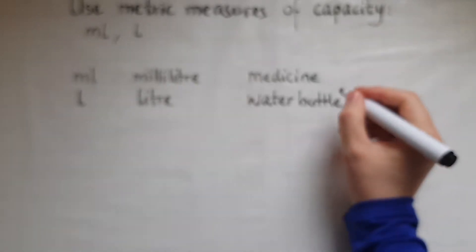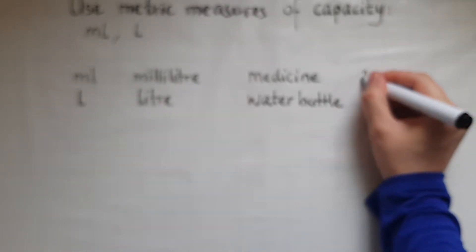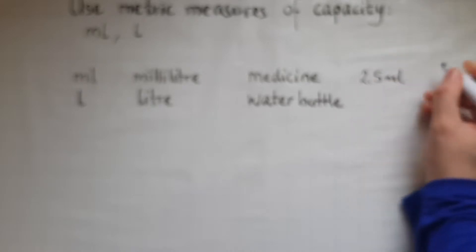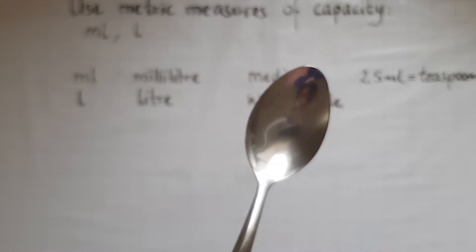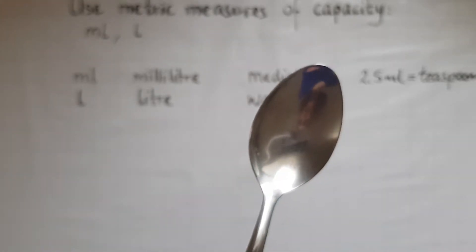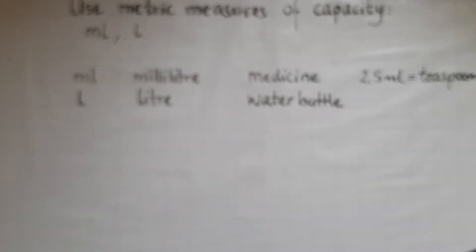So medicine, 2.5 mL is one teaspoon. Whereas a tablespoon like this will be filled with about five milliliters. So let's try that out.